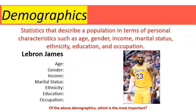The first type of market segmentation is demographics. Demographics are statistics that describe a population in terms of personal characteristics such as age, gender, income, marital status, ethnicity, education, and occupation. The key thing with demographics is that they are statistics — they're black and white, there's really no debating them, no middle ground. A demographic just is what it is.